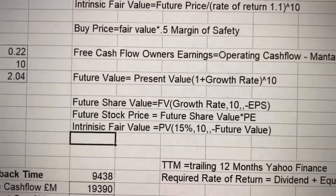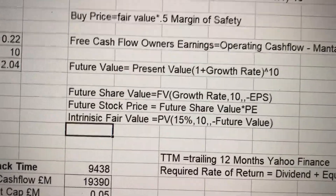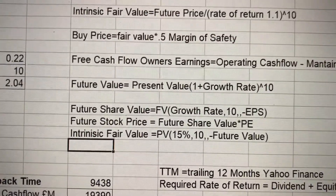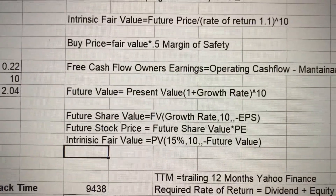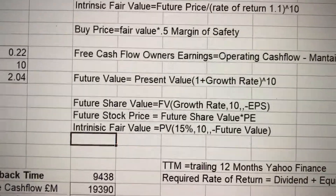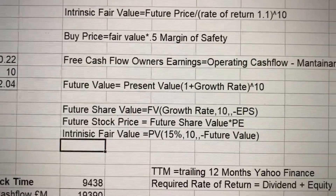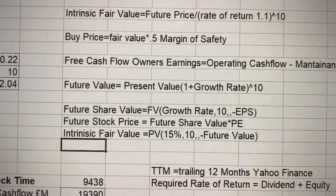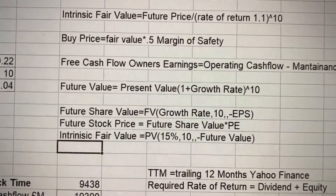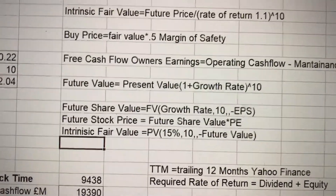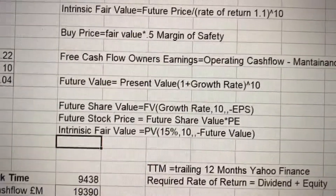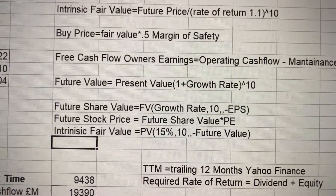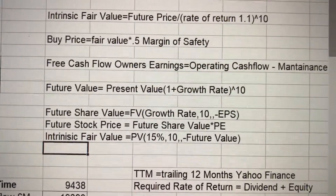The intrinsic fair value or sticker price — you type in equals PV; it'll come up with open brackets. We're looking at 15% as a minimum return, working backwards. So it's: 15% comma 10 for the number of years, comma comma minus the future value you calculated above, close the brackets. That gives you an intrinsic fair value number, or the sticker price. For the buy price or MOS figure, you're really looking at half of that — so you divide it by two. If the share price is well above that figure, it's not really going to be a buy.